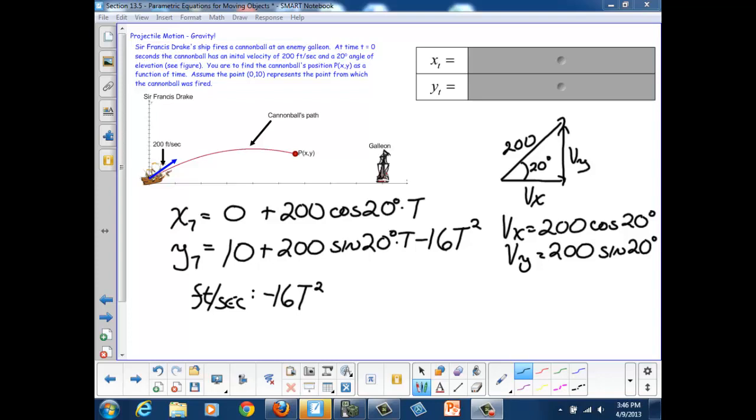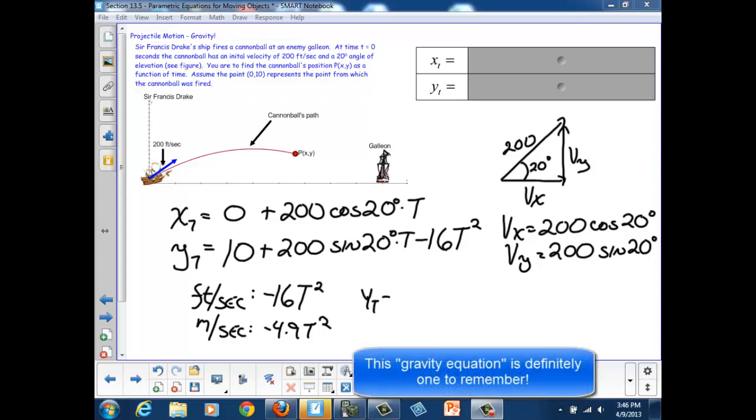If we were working in meters per second, that term would instead be negative 4.9t squared. So the general form of our y parametric piece is going to take the form y of t equals, I'll put it in reverse order here, negative 16t squared plus our initial y velocity times time plus our initial y position.